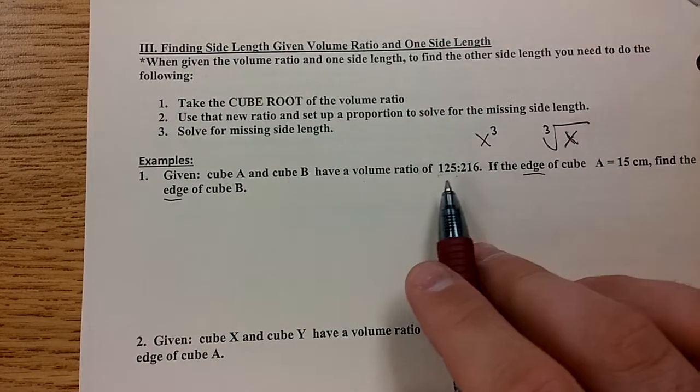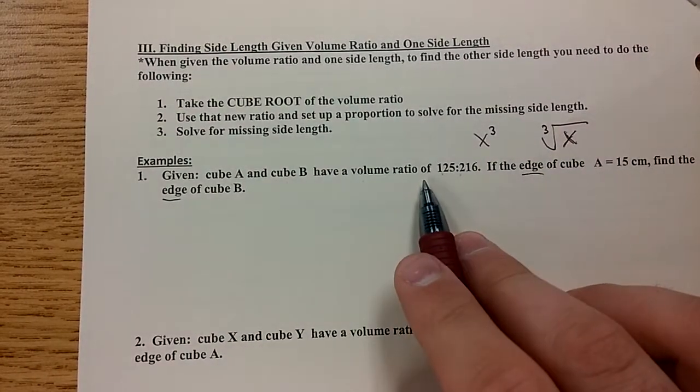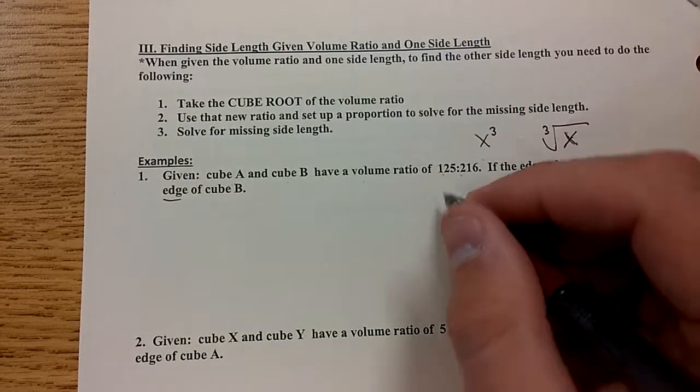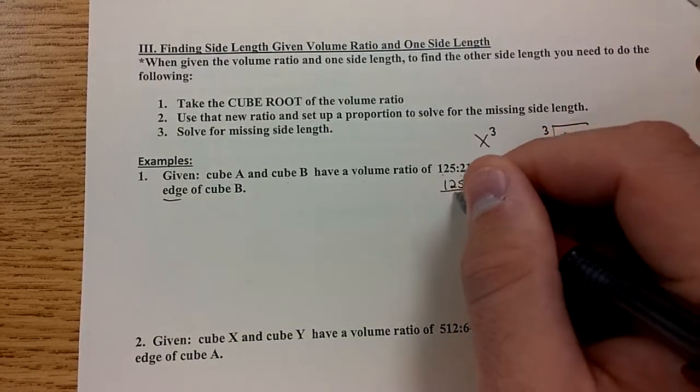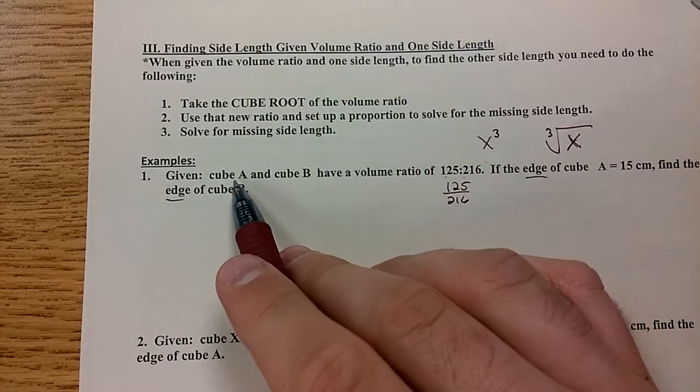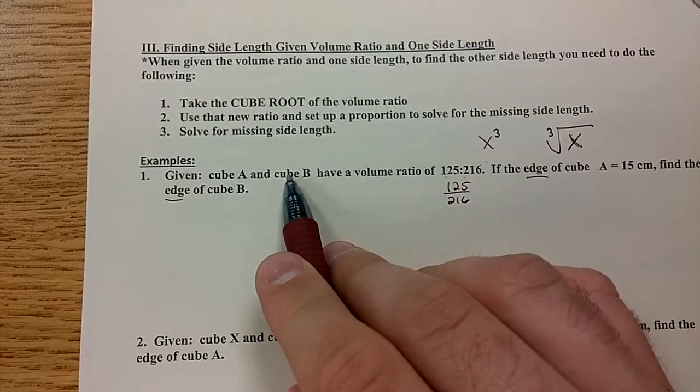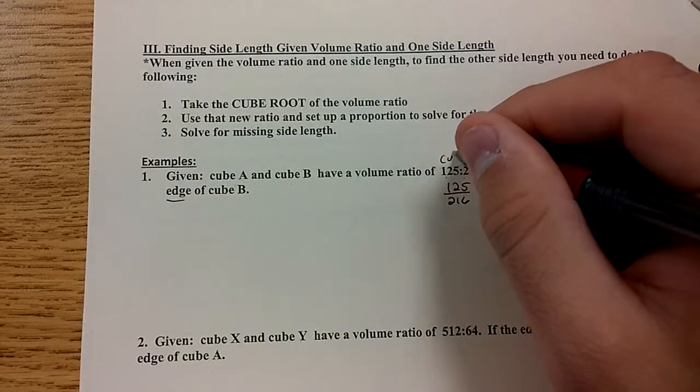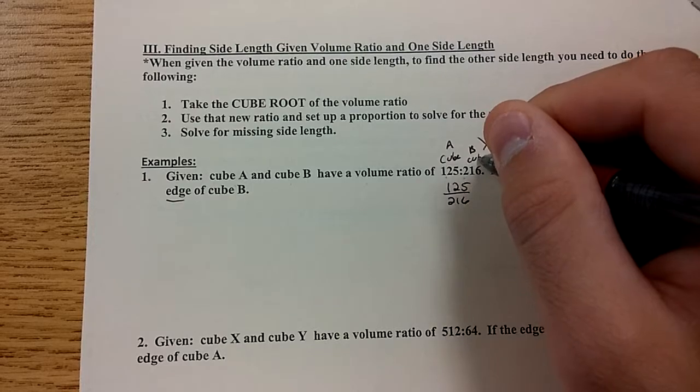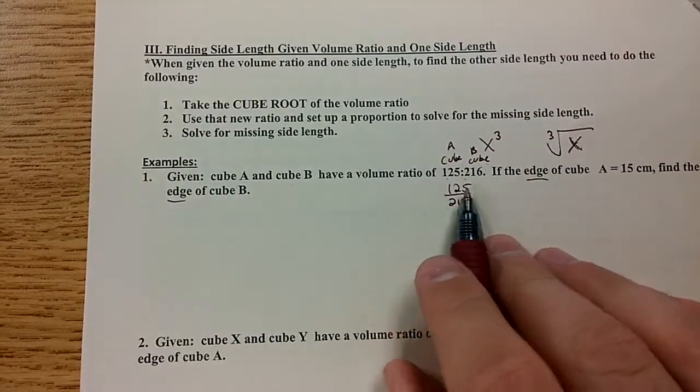They give you a volume ratio, cube A and cube B. Notice how it's not written as a fraction. You can write it as a fraction or you can write it with the colon symbol there. It's important to know that cube A comes before cube B. So this is going to be cube A, the first number. And cube B is the second number, in case you're concerned about which one's labeled which.